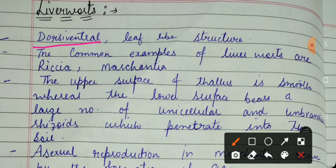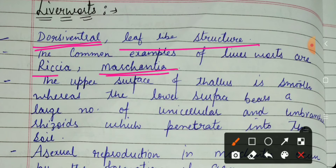The palm is called the ventral surface. Another example: a cockroach on the ground — the surface it looks at is the dorsal surface, and the lower surface is called the ventral surface. So the body of liverworts is dorsiventral, leaf-like in structure. A very common example of liverworts is Marchantia.